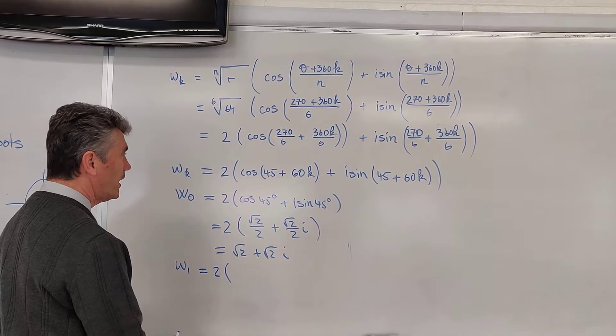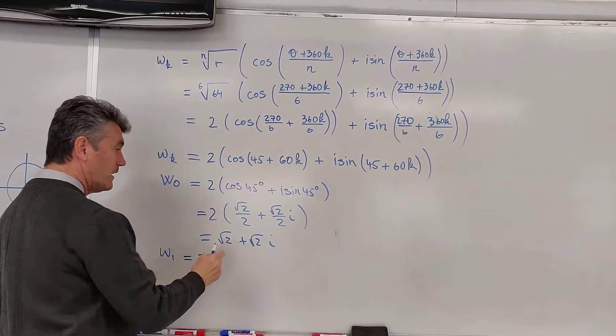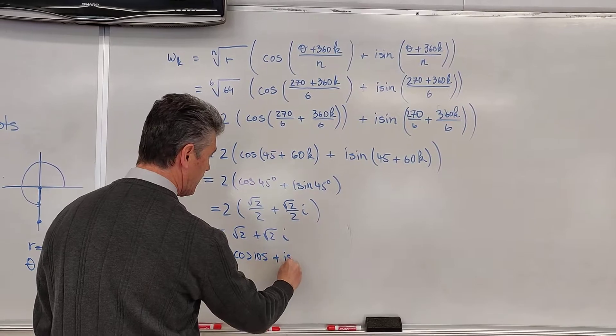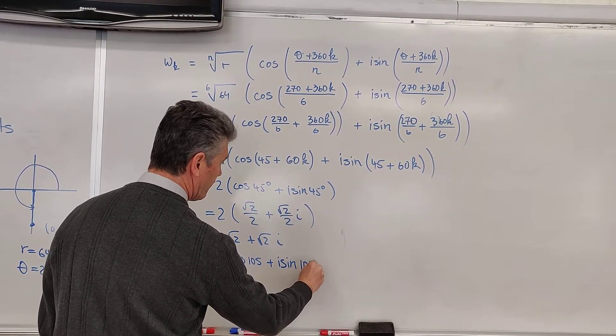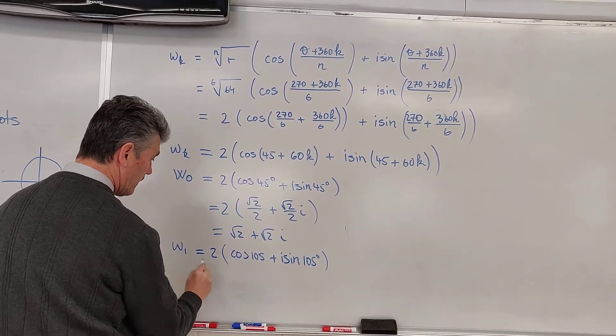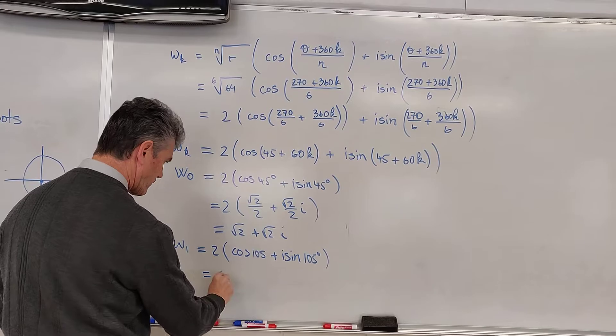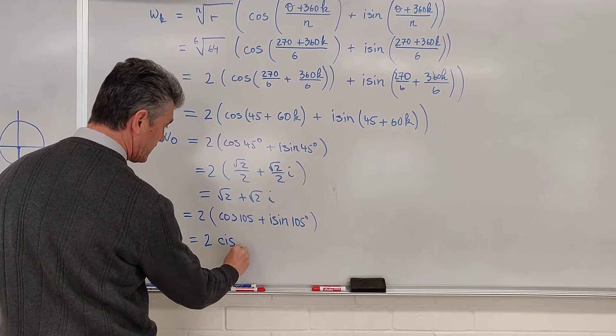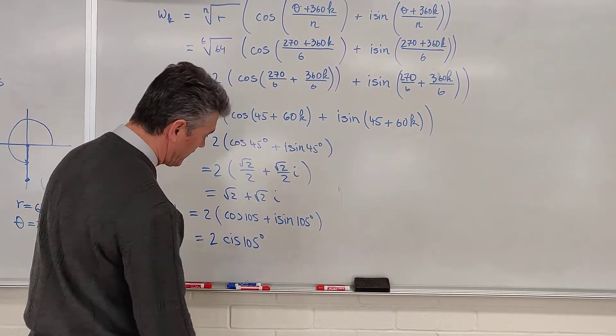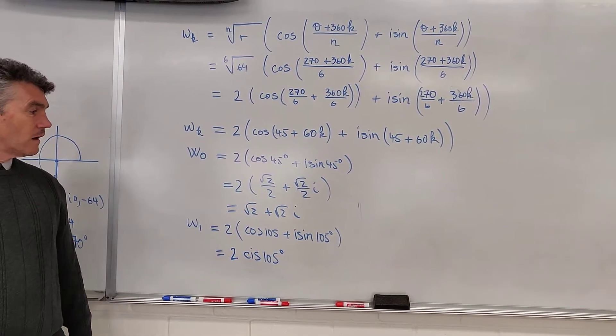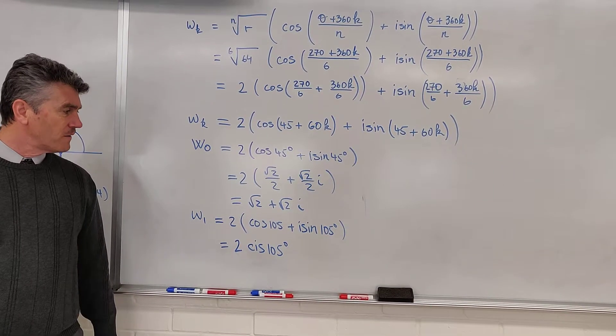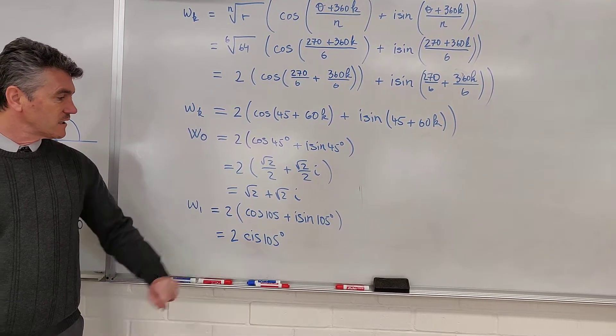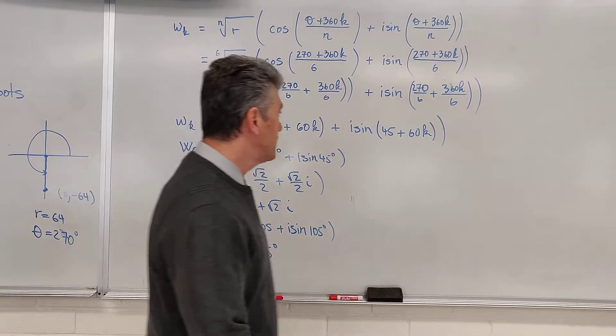What about W sub 1? Okay, W sub 1. We're going to replace k by 1. We get 2 times cosine of 105 plus i sine of 105. I'd like to do more, but I can't. A shorthand way of writing this is 2 cis 105 degrees. Now, we're not going to figure out cosine or sine of 105. No, we're going to not distribute the 2. We leave the answer in this form. It's easier for the teacher to grade. We continue.